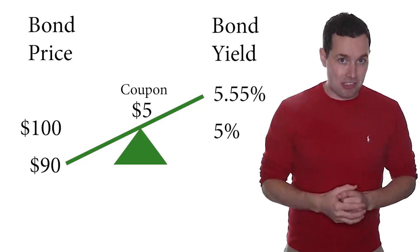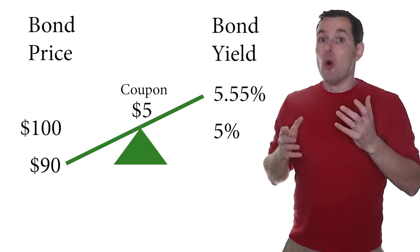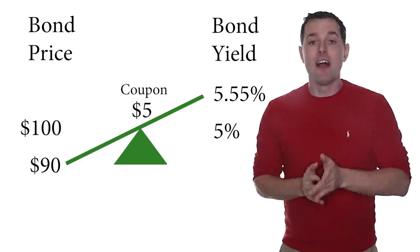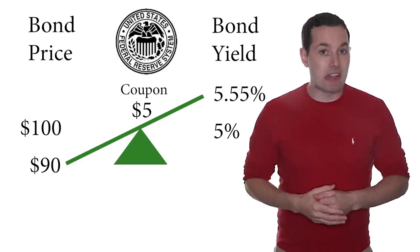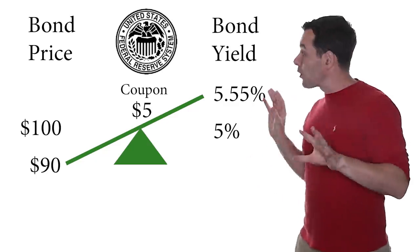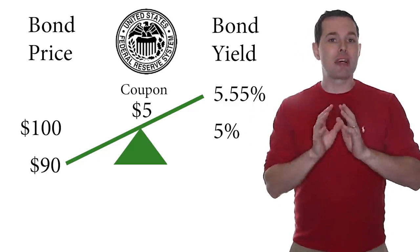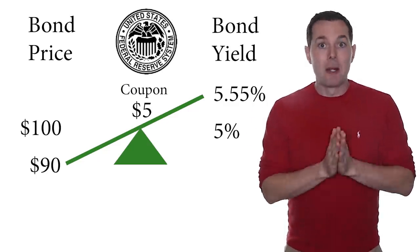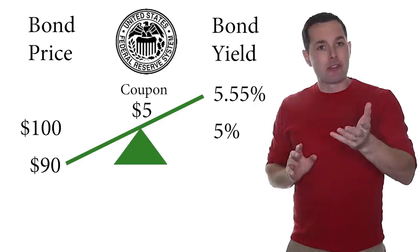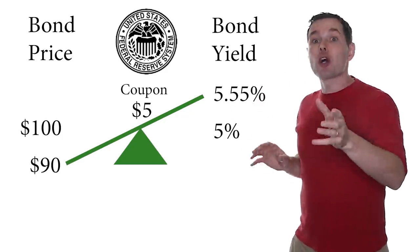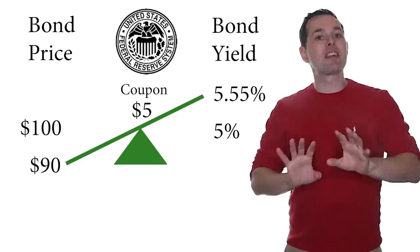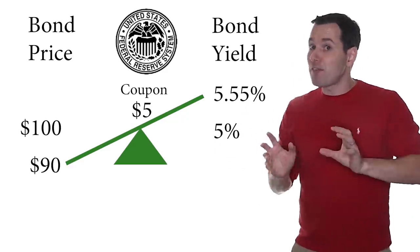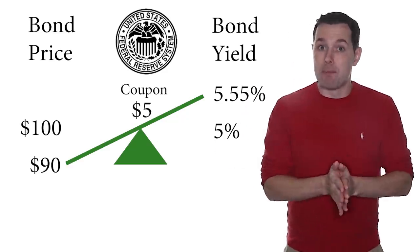And here's where it gets interesting. What if, just like what's happening in reality today, the Federal Reserve starts lowering interest rates? Our coupon is already set, so we don't have to worry about that changing on us. Even if the Fed lowers rates, it's not going to affect our individual coupon because we already own this bond. But it very much does affect the value of the bond itself.